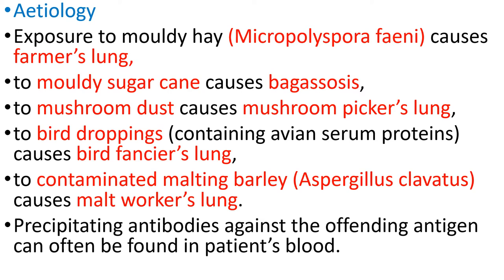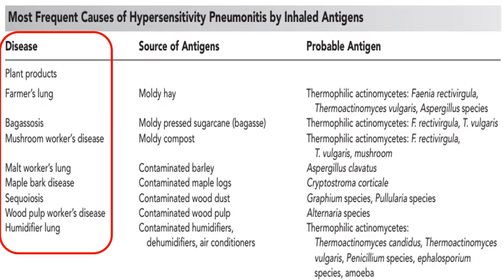Precipitating antibodies against the offending antigen can often be found in the patient's blood. These are the most frequent causes of hypersensitivity pneumonitis by inhaled antigen.